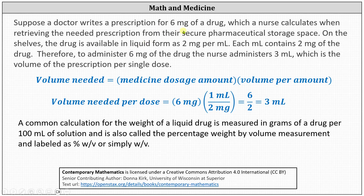Suppose a doctor writes a prescription for six milligrams of a drug, which a nurse calculates when retrieving the needed prescription from their secure pharmaceutical storage space. On the shelves, the drug is available in liquid form as two milligrams per milliliter — each milliliter contains two milligrams of the drug. Therefore, to administer six milligrams of the drug, the nurse administers three milliliters, which is the volume of the prescription per single dose.